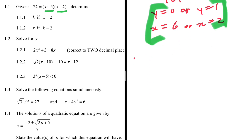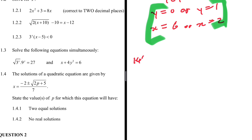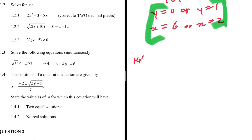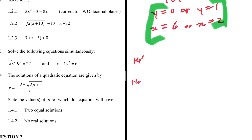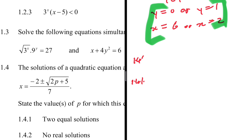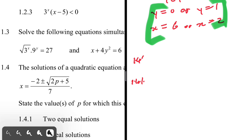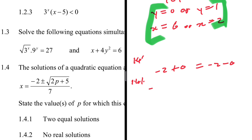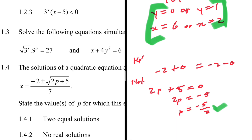For 1.4: the solutions of a quadratic equation are given. For 1.4.1, we need two equal roots. For the two roots to be equal, the square root part must equal zero, so 2p + 5 = 0, giving 2p = -5, therefore p = -5/2.